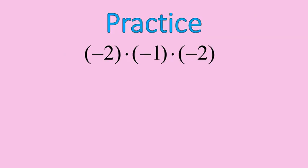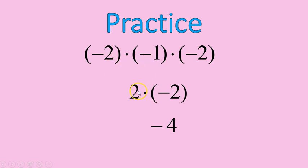Let's look at some practice problems. Go ahead and pause the recording and try this practice problem on your own. Welcome back. A negative times a negative gives you a positive, and a negative times a positive gives you a negative. So: 2 times 1 is 2, and 2 times 2 is 4. Notice there are 3 negative numbers in the original question, so the final answer is negative. An odd number of negatives gives you a negative answer — 3 negatives at the top, negative answer at the bottom.